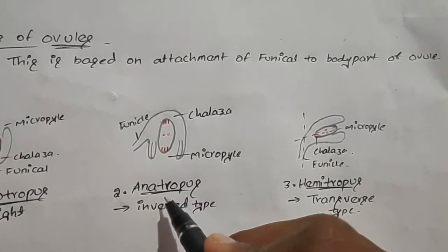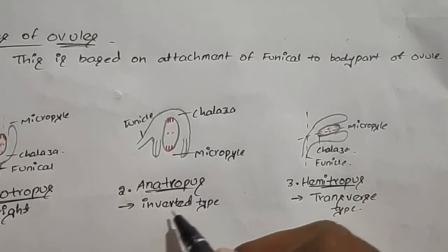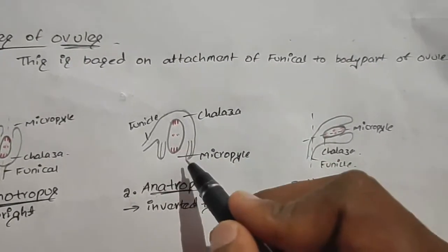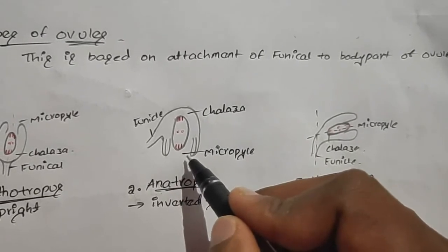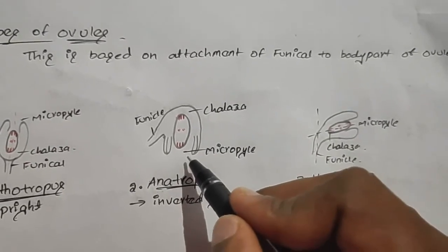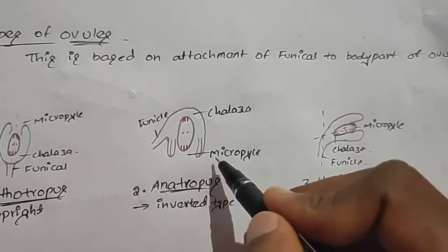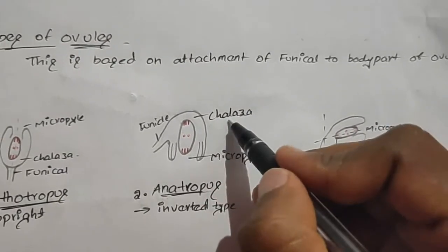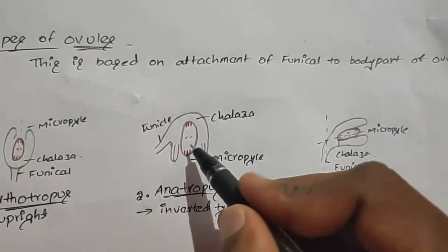The second type is anatropous, which is an inverted type. In this type, the micropyle end where the integuments are open is towards the lower side and the chalaza end is towards the upper side.